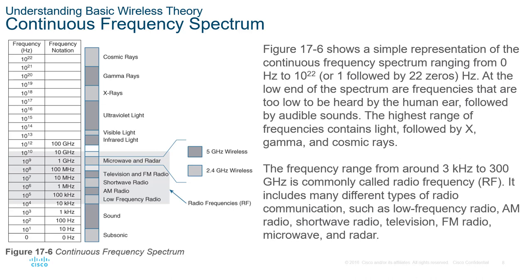All frequencies are waves — subsonic, what we can hear, wireless, and then into radio waves or waves that we don't see or hear, like cosmic rays, gamma rays, X-rays, and ultraviolet light. Infrared light and visible light are waves as well. So that is a basic understanding of the frequency spectrum, covering both audio and visual light as well as things that are not viewable.